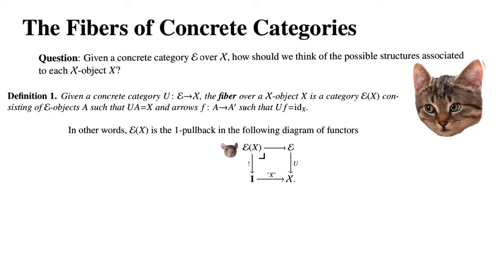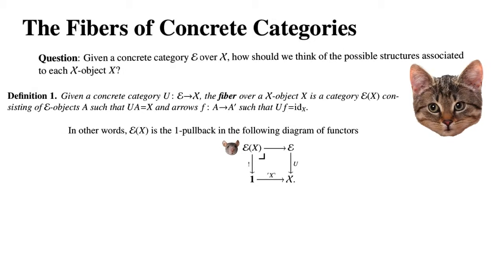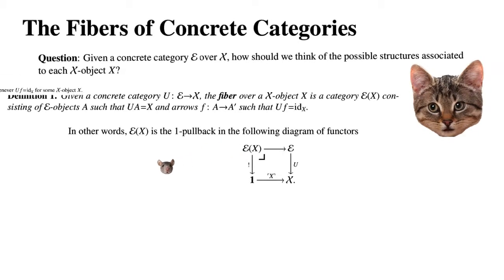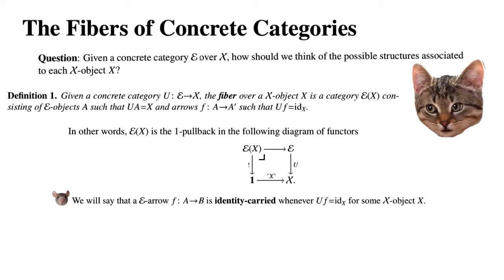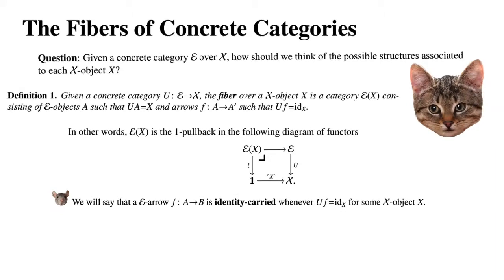Note that since U is faithful, the fiber category is always a thin category. In the subsequent sections, we're going to say that an E-arrow F: A → B is identity-carried whenever UF equals the identity on X for some X-object X.